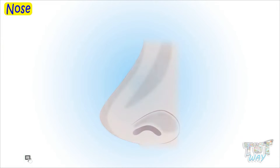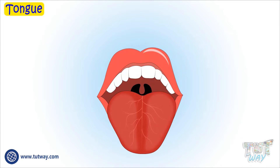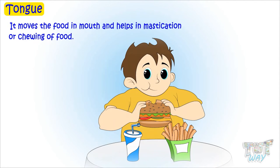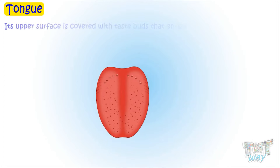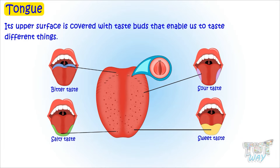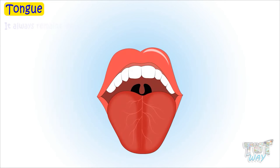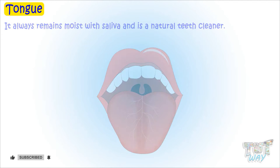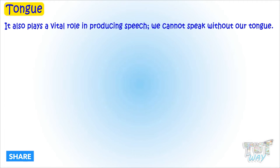So we have learned about our nose. Now we will learn about our tongue. The tongue is a muscular structure that is attached to the floor of our mouth, and it plays a very important role. It moves food in our mouth and helps in mastication, or chewing of food. Its upper surface is covered with taste buds that enable us to taste different things. The tongue always remains moist with saliva and is a natural teeth cleaner. The tongue also plays a vital role in producing speech.